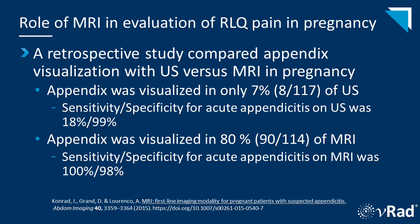However, the limitations of ultrasound for appendicitis are clear, and the issue is non-visualization. When ultrasound is available and an abnormal appendix is found, the workup can stop. However, when the appendix is not visualized, which happens commonly, MRI can usually identify the appendix and make the diagnosis. A retrospective study compared appendix visualization with ultrasound versus MRI in pregnancy, and the appendix was only visualized in 7% of ultrasounds. The sensitivity and specificity for acute appendicitis on ultrasound was 18% and 99% respectively, basically making it a rule-in modality. The appendix was visualized in 80% of MRI, and the sensitivity and specificity are both much better at 100% and 98% respectively.